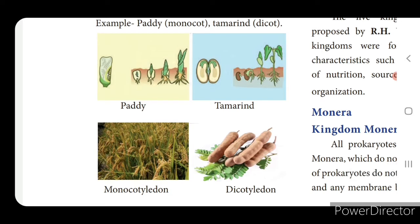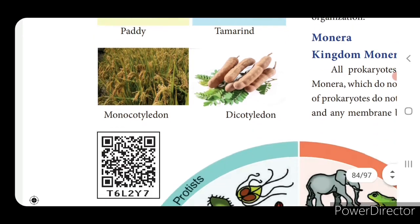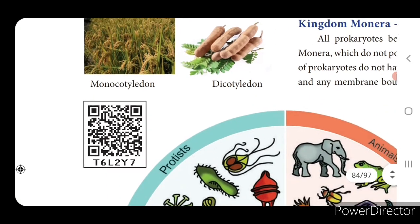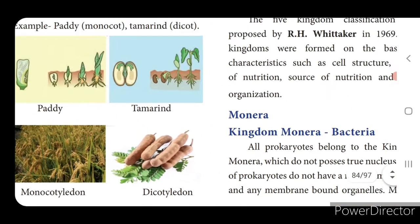If you take paddy, it is having only one cotyledon and that cotyledon develops into a plant. For tamarind, if you see that seed, you can divide it into two equal halves.